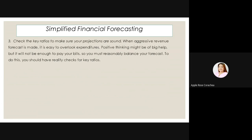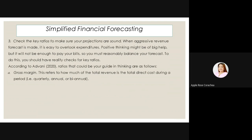Number three, check the Q ratios to make sure your projections are sound. When an aggressive revenue forecast is made, it is easy to overlook expenditures. Positive thinking might be of big help, but it will not be enough to pay your bills, so you must reasonably balance your forecast. According to Advani, ratios that could be your guide are as follows: Letter A, gross margin — this refers to how much of the total revenue is the total direct cost during a period, whether quarterly, annually, or biannual. Minsan masyadong mataas si direct cost kaysa sa total revenue — lugi si negosyo.